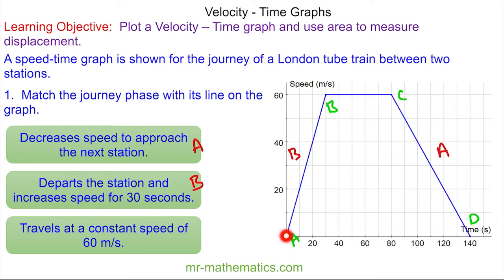So you can see the train has sped up, it has gone at a constant speed, and then it has decreased in speed to a stop, probably at the next station. So this section would go here. Okay, let's move on.